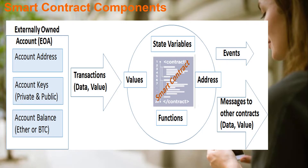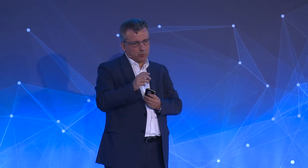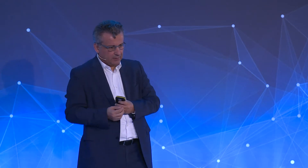The components of the smart contract require defining actors and their roles. We have the external loan account, which is responsible for the account address and any associated balance. The smart contract itself defines different components like state variables, values, functions, and addresses. The output of the smart contract is called events, which interact and are managed with other components. These are the main components used for smart contract configuration.